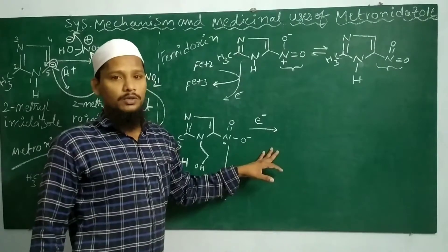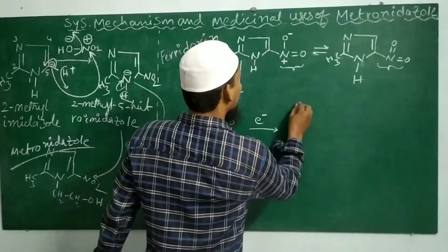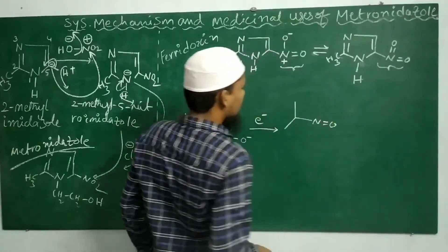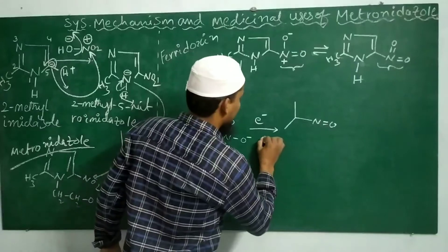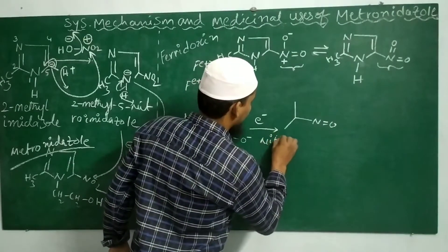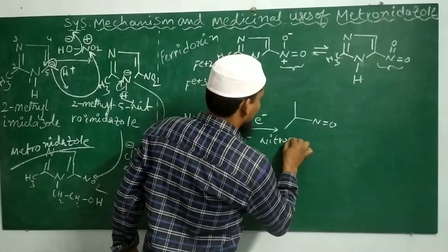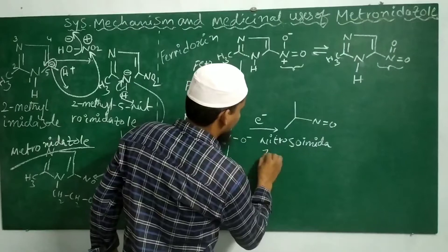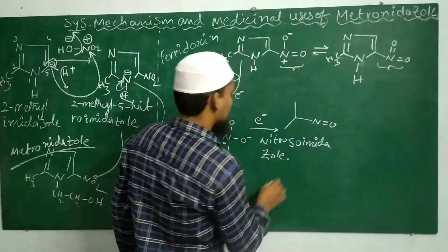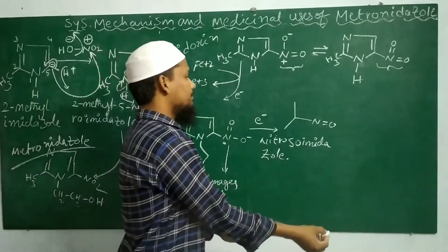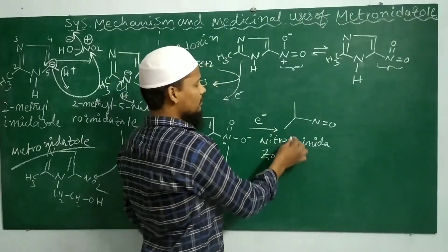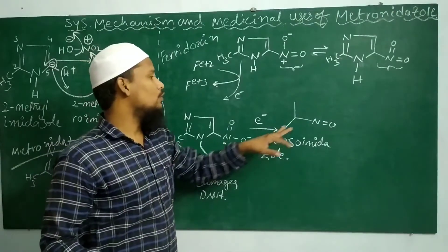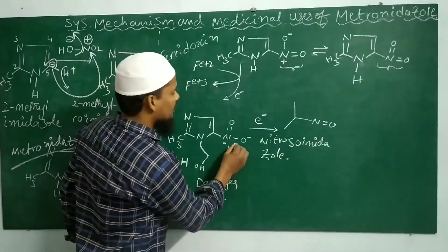Thereby it causes damage to the DNA. If the radical anion takes up one more electron, it gives a nitroso compound — nitroso imidazole. When the nitro imidazole radical anion is converted to the nitroso compound, it liberates an oxygen atom — nascent oxygen.